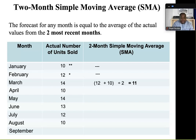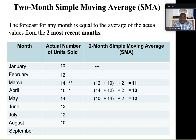Let's move to April. For the previous two months, we pick up the 14 units from March plus the 12 units from February, divided by 2, and our average is 13. So we have a forecast of 13 for April. On to May — we pick up the 10 units from April plus the 14 units from March, divided by 2, to give a forecast of 12. And we continue like that.